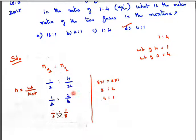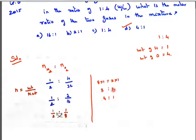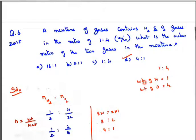Simplifying 1/2 : 4/32 gives 1/2 : 1/8. Dividing further, we get 1/2 : 1/8. Cross-multiplying: 1×8 = 8 and 2×1 = 2, giving 8:2. Simplifying again, 8:2 = 4:1. So 4:1 is the molar ratio of hydrogen to oxygen. This is the molar mass ratio.